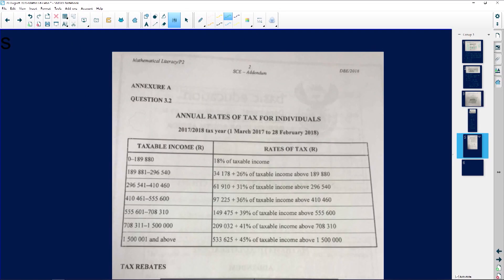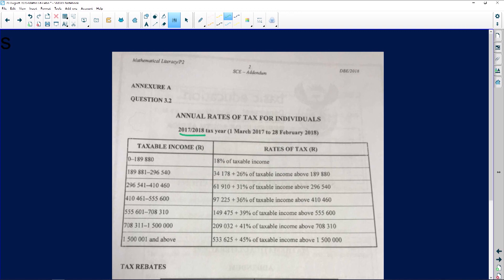The next question we have is again about taxable income, but in this particular case the scenario we've been given is a little different. The year 2017-2018, first of March all the way to February of the following year. Those are the tax brackets and all of that information. Again, if it's anything between zero rand, how do we know it's rand? We've got the rand symbol over there.